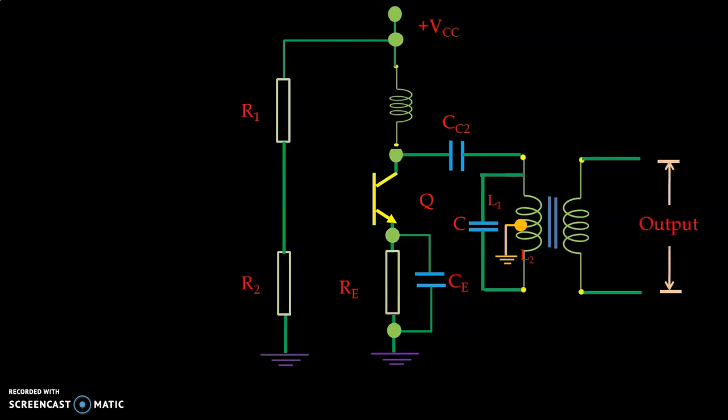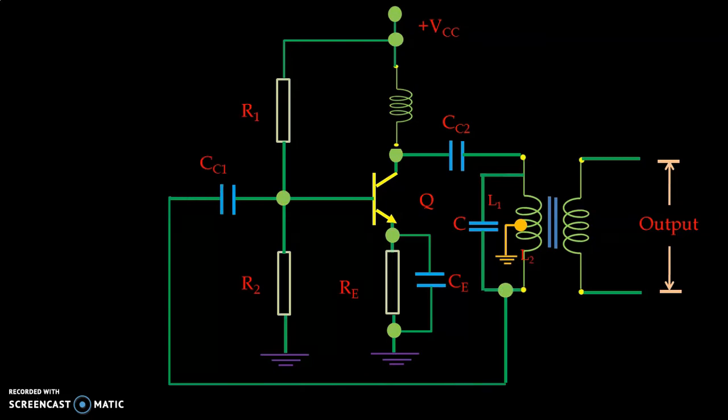And then we take the output. The feedback is very important in case of oscillator circuit. We do not give any input. Initially when A dot beta is greater than 1, oscillation starts. And to maintain sustained oscillations, A dot beta is equal to 1. So the voltage from the L2, that is the bottom part of the inductor circuit, is taken as feedback. And it is connected to the base via a coupling capacitor CC1.